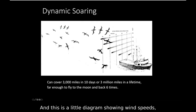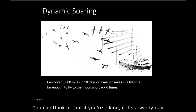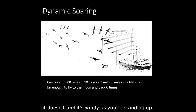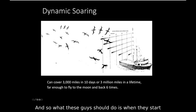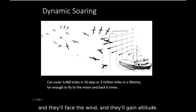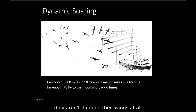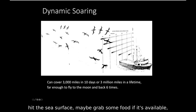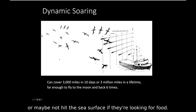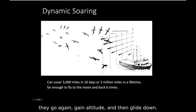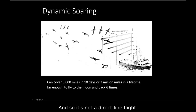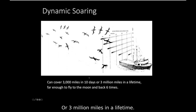Albatrosses don't expend a lot of energy flying because they do a thing called dynamic soaring. The higher you get from the sea surface, the greater the wind speed — like when you're hiking on a windy day and hunkering close to the ground feels less windy than standing up. When they start losing elevation, they turn to face the wind and gain altitude without flapping their wings. Once they gain altitude, they glide down, get close to the sea surface, maybe grab some food, then turn again and repeat. With radio transmitters, researchers found some of these birds cover 3,000 miles in 10 days, or 3 million miles in a lifetime.